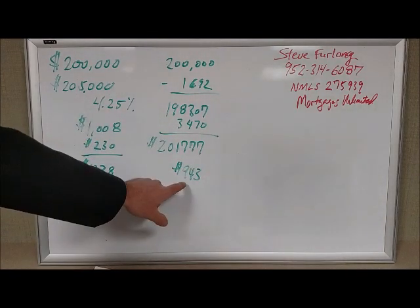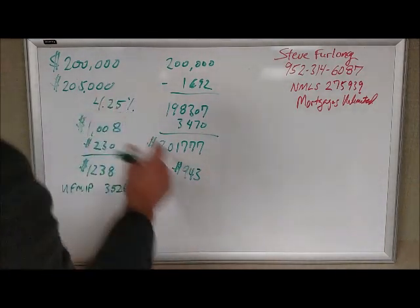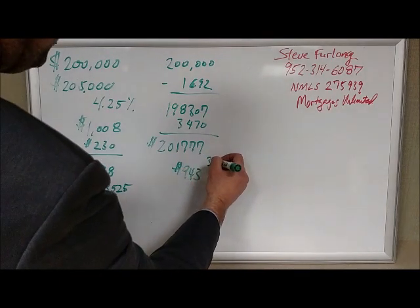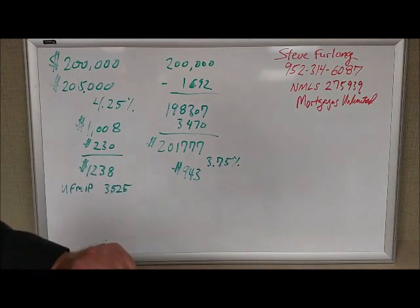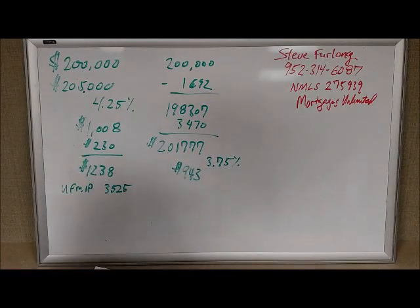But let's just do a comparison here. So 943 instead of 4.25 is 3.75. That's the principal and interest payment for this total loan amount. And what about the FHA mortgage insurance, the MI?